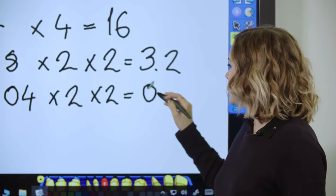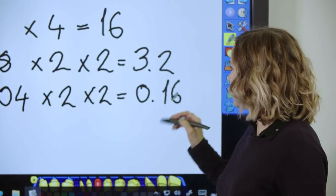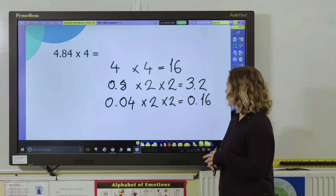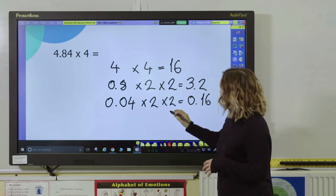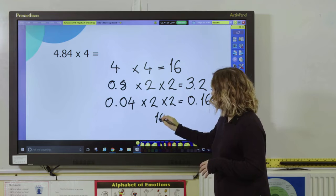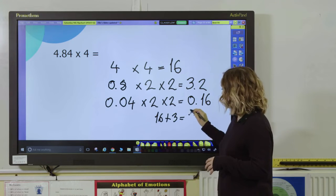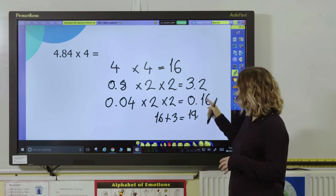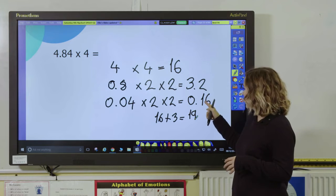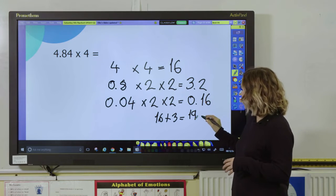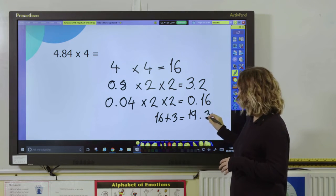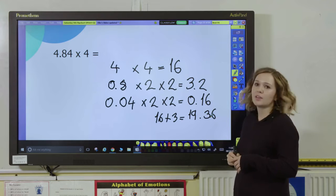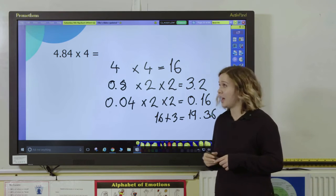And again we just add everything up. So we've got 16 plus my three ones here that would give me 19, and then I've got my two tenths and my sixteen hundredths here, so it's 19.36. So there's an informal method they can use again.